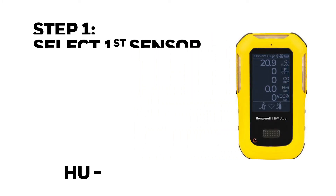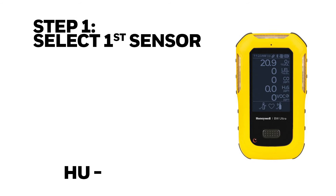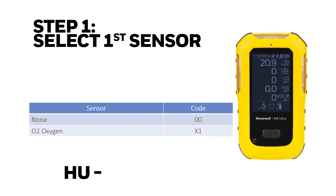Step 1: select the first sensor. If you want an O2 sensor, select the code X1. If you don't want it, select the code 00. In this example I will be selecting X1.